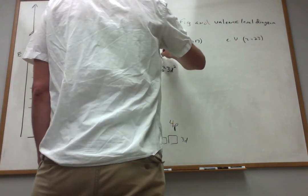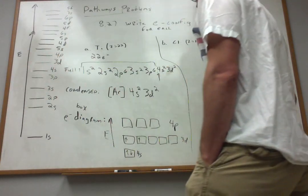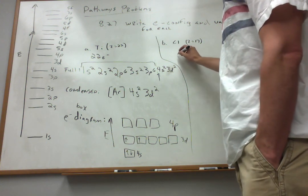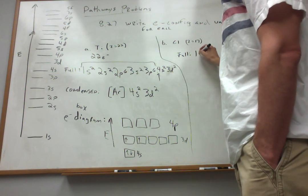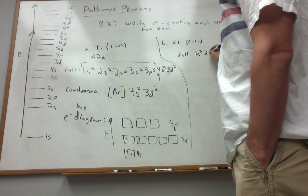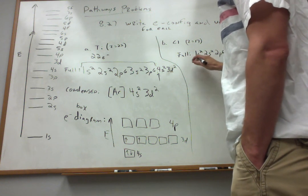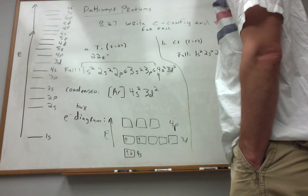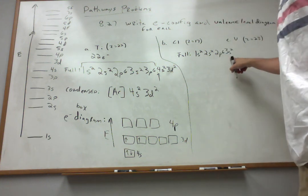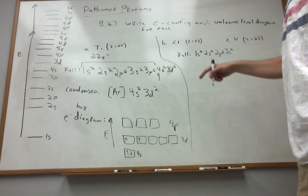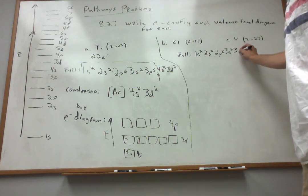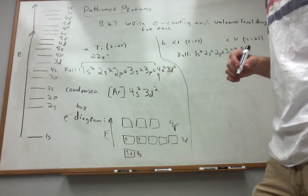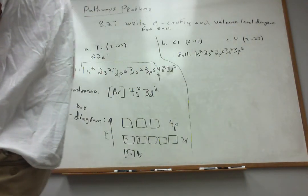Now let's move on to chlorine, part B. For the full configuration: 1s2, 2s2, 2p6 — that's my first 10 electrons. Then 3s2 gets me to 12. I still have 5 more because chlorine has 17 electrons, so I need to do 3p5. This is for a neutral chlorine atom.